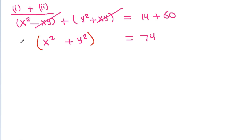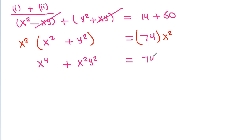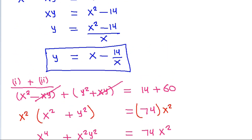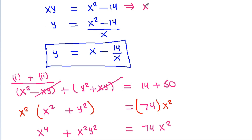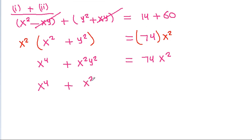If we multiply both sides by x squared and substitute y equals x minus 14 over x, we get x squared times x squared plus x squared minus 14 whole squared is equal to 74 x squared.